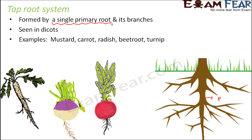Some examples of dicots with a tap root system are mustard, carrot, radish, beetroot, and turnip. These are actually roots that we eat — the edible part of a carrot or a radish is the root of the plant. The primary root is what we actually consume, and from this primary root we have secondary and tertiary branches. In the case of turnip, you might wonder how a spherical-shaped object can be a root.